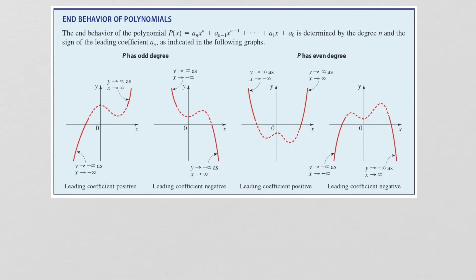For an even degree polynomial, it's easier to describe. With a positive leading coefficient, the graph goes up on both sides: y goes to positive infinity as x goes to both positive and negative infinity. With a negative leading coefficient, the graph simply goes down on both sides.